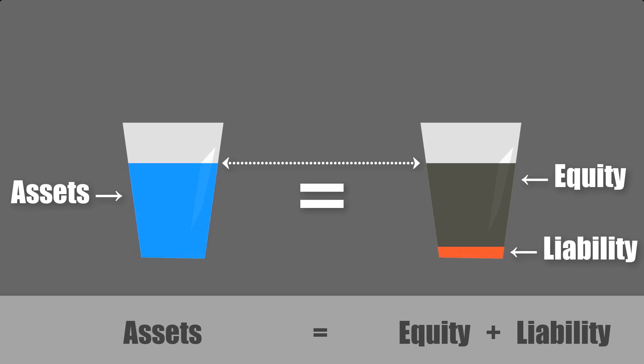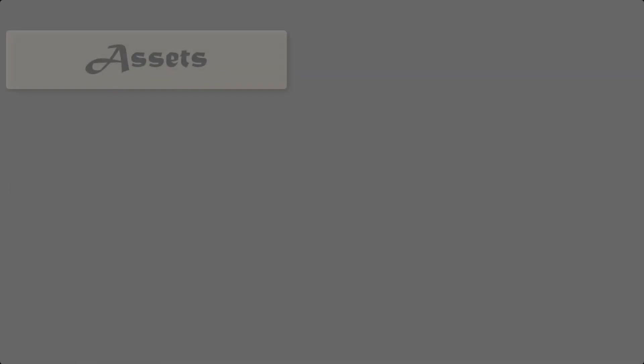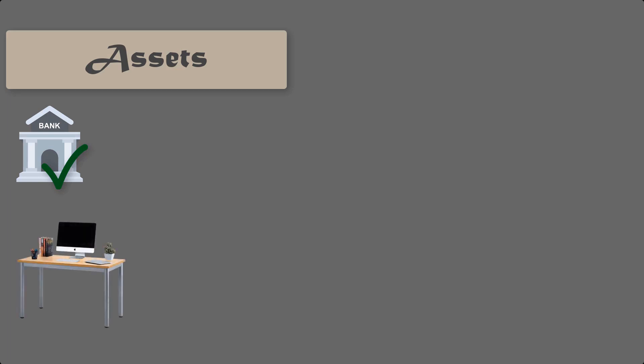Before we see some practical examples, let us understand what assets, liability, and equity are. An asset is cash or an object that can be converted into cash now or in the future. For example, a current bank account is an asset because you can withdraw what's available in cash. You can also sell office furniture or computers and get cash in return. It doesn't really matter if you sell them at a loss — what matters is that in principle you can convert them into cash. This means office furniture and computers are in fact assets.